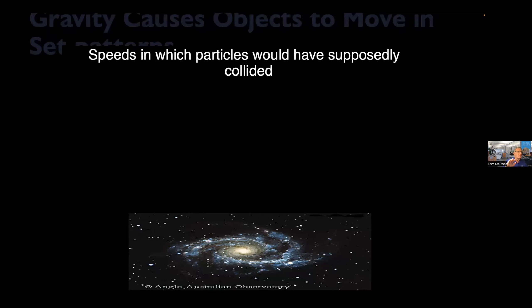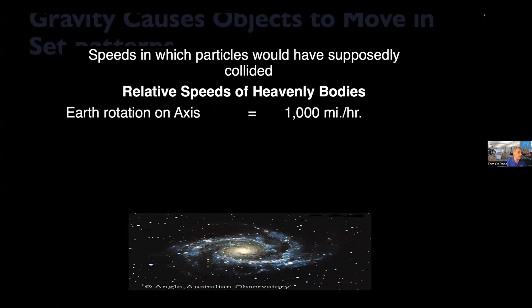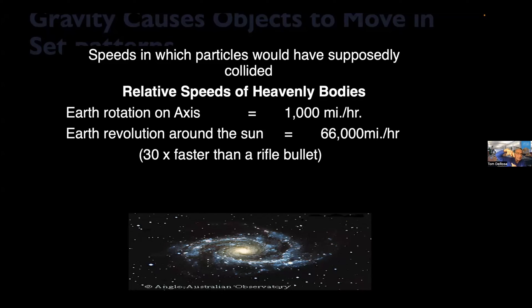So I want to just give you a few statistics here about the idea of motion and gravity. Remember, gravity has motion to it. So the speeds in which particles would have supposedly collided. So if you were relative speeds of heavenly bodies, the Earth's rotation, you're going at 1,000 miles per hour. If the Earth would stop, goodbye, you're flying 1,000 miles per hour into space. You don't feel it, but that's what you're doing right now. If you take a look at the Earth's revolution as it goes around this axis, as it goes around the axis and it follows its orbit, an orbit, constant orbit around the sun, we're traveling at 66,000 miles per hour. 30 times faster than a rifle bullet.